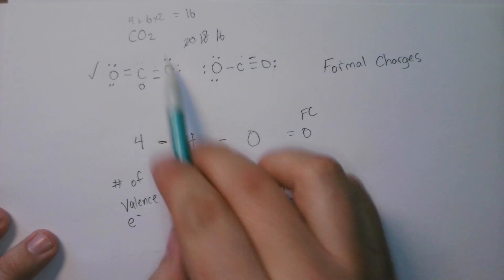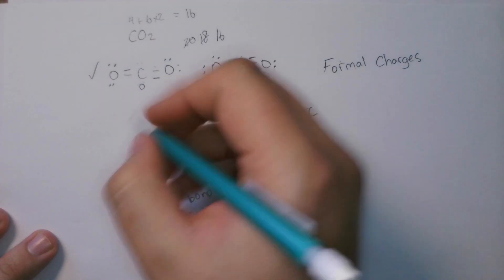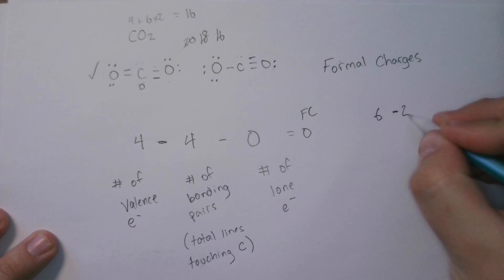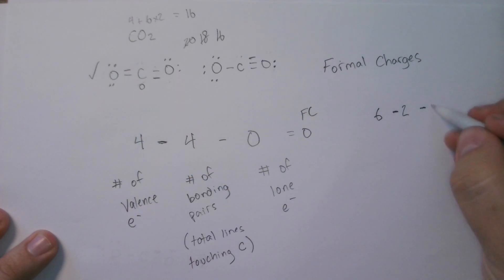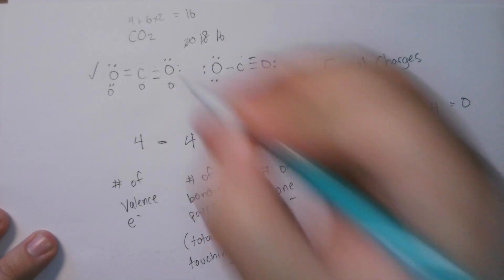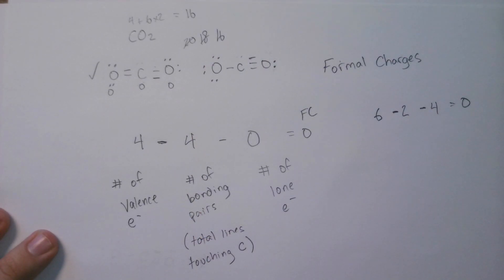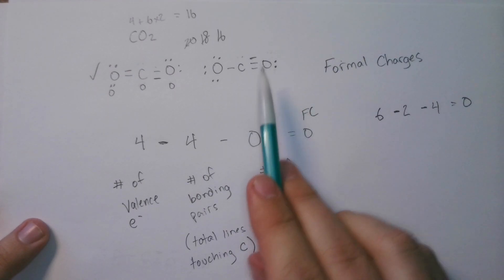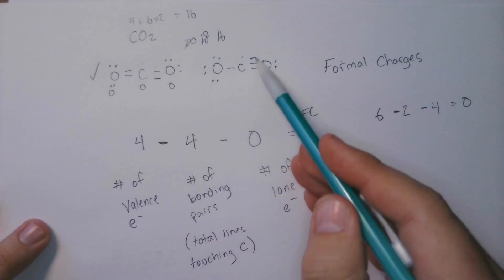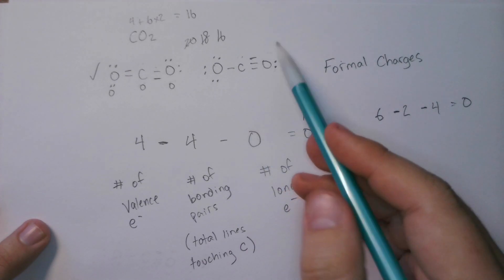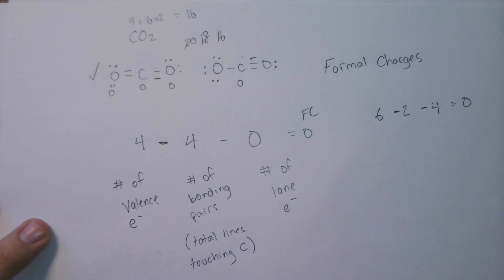Repeating for oxygen: oxygen normally has six valence electrons. In the symmetric CO2, this oxygen has two bonds touching it, so subtract two, and it has four dots, so subtract four. Six minus two minus four equals zero. The other oxygen is identical — two lines and four dots — so its formal charge is also zero. Zeros are great; zero means no charge, which is the most stable possible arrangement. Comparing to the asymmetric CO2, carbon still has four things touching it, so its formal charge is still zero.